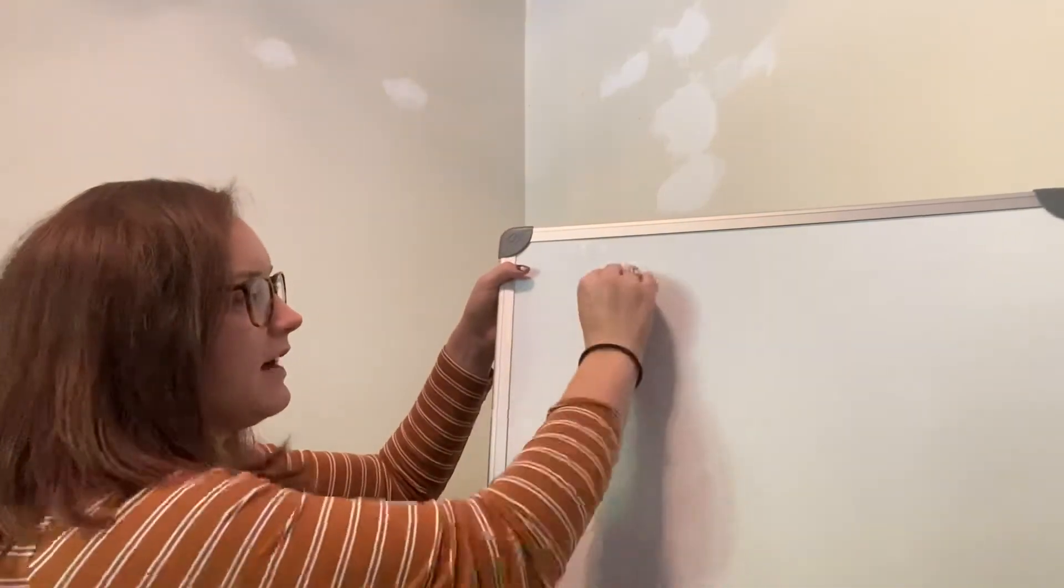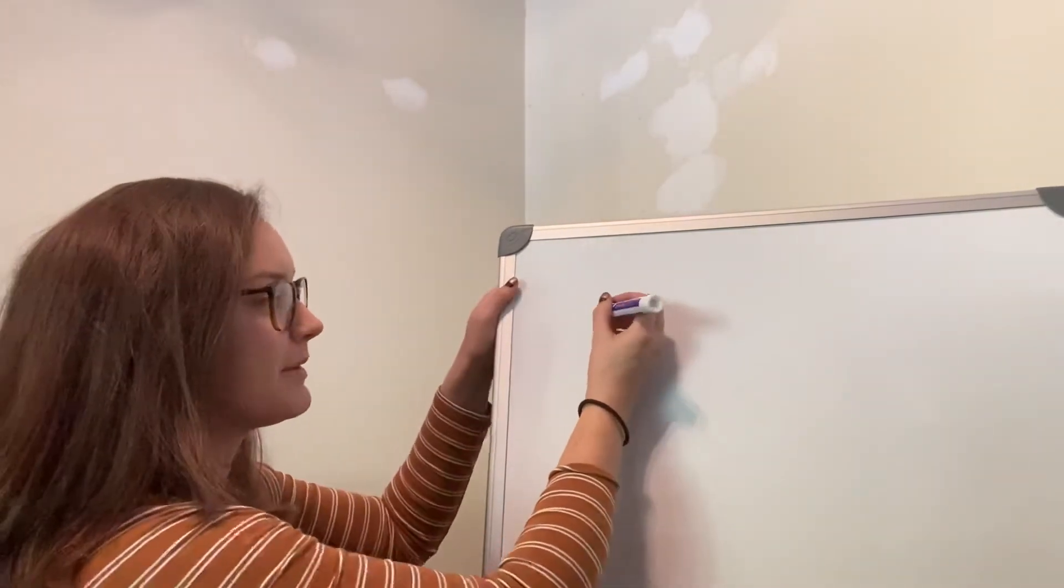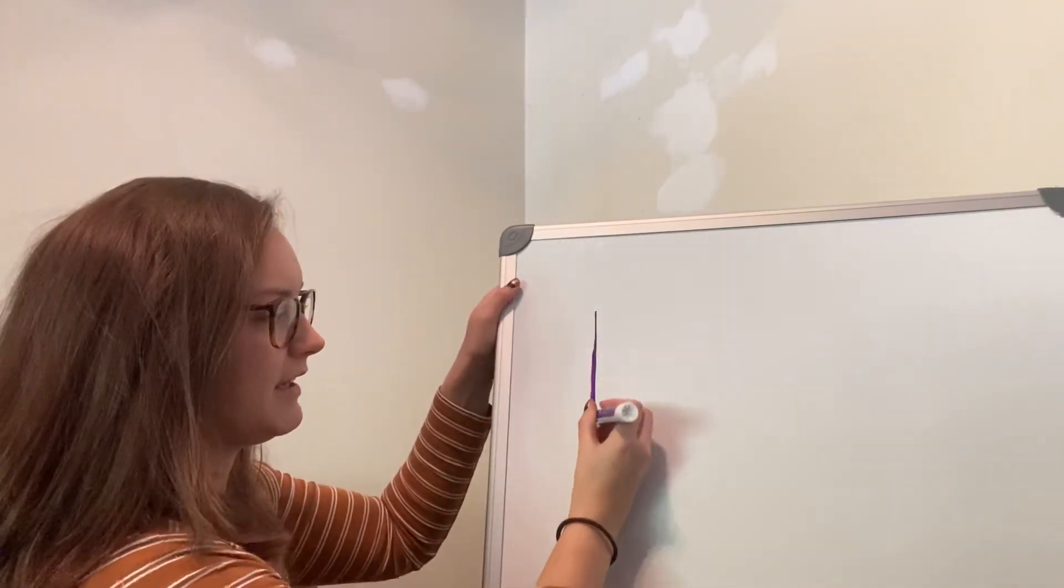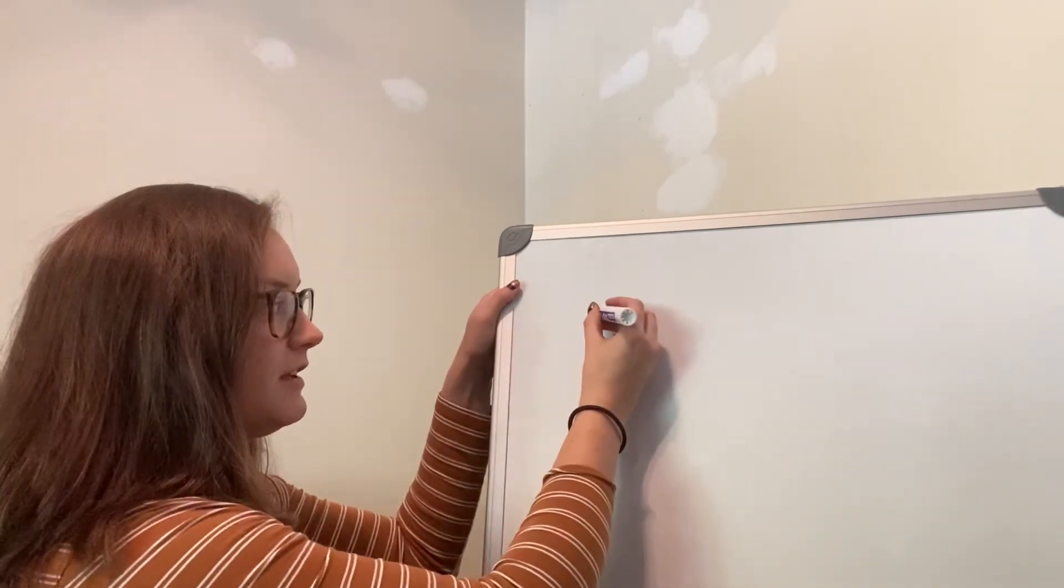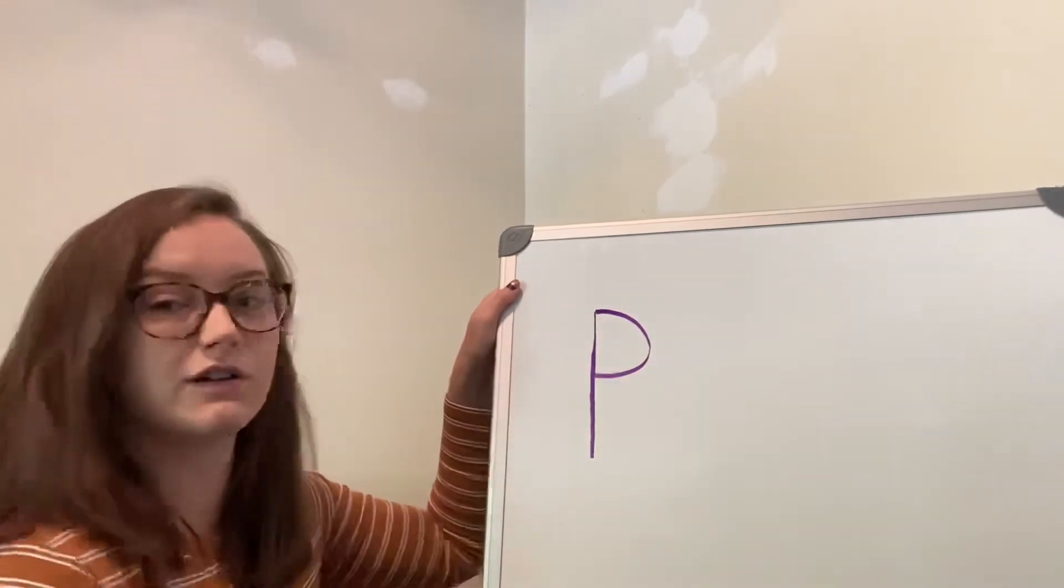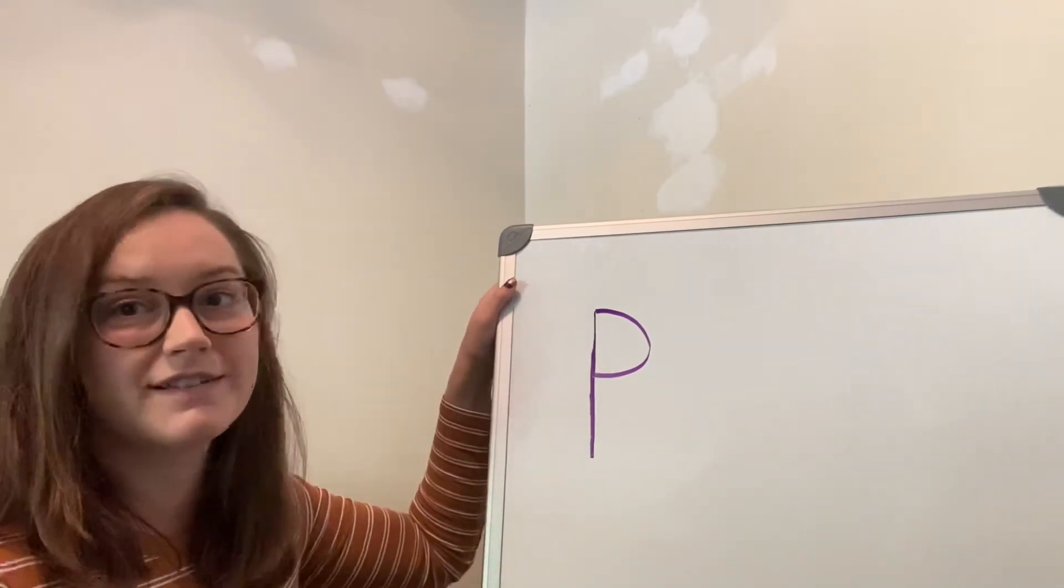So to make our P we're going to start at the top, make a big line down, frog jump to the top, little curve just like that.